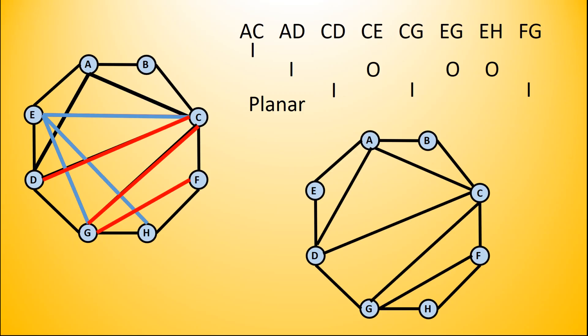The three that are labeled with an O must go on the outside, so we have CE, EG, and EH. All of the edges are now on the graph and we can clearly see that it is planar.